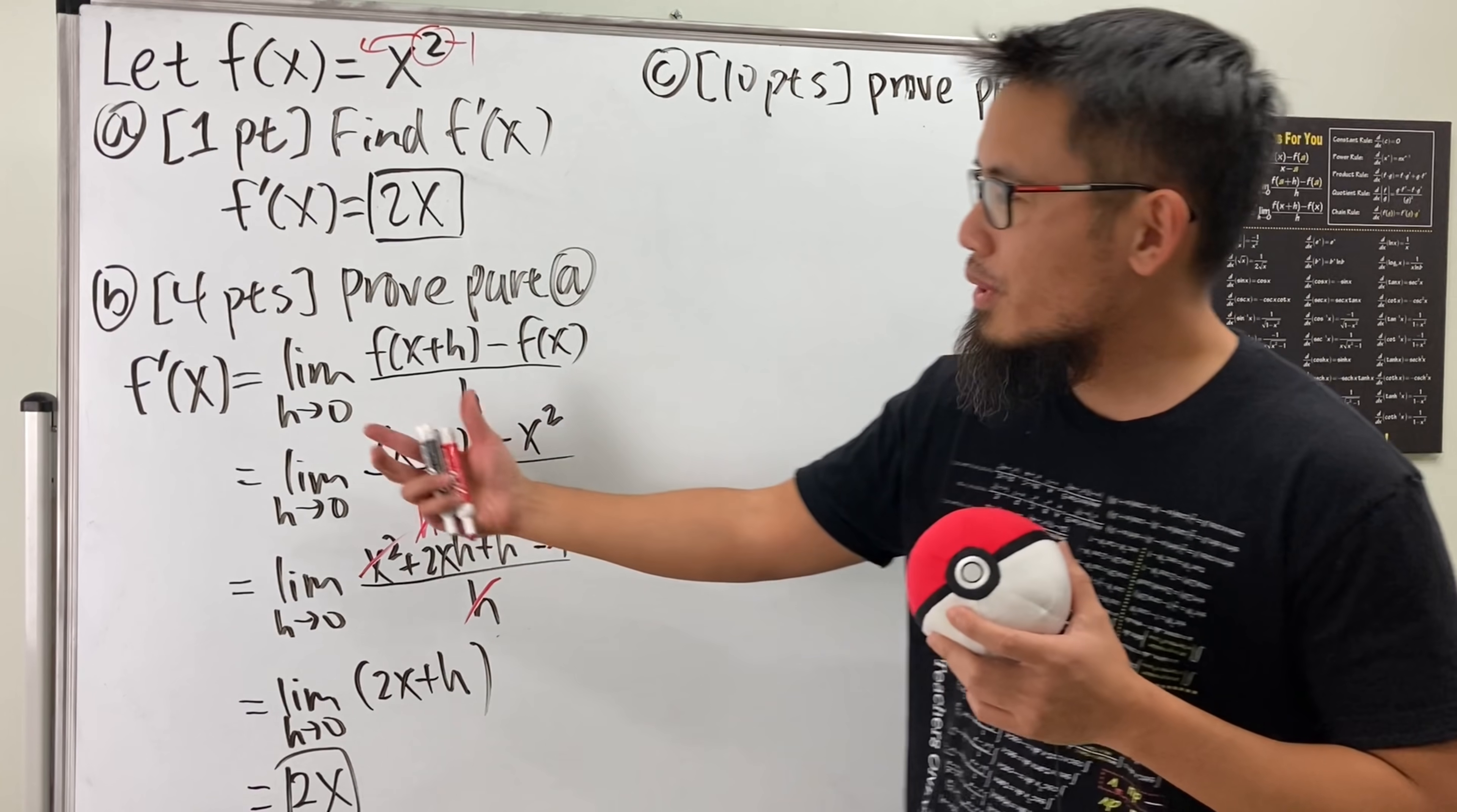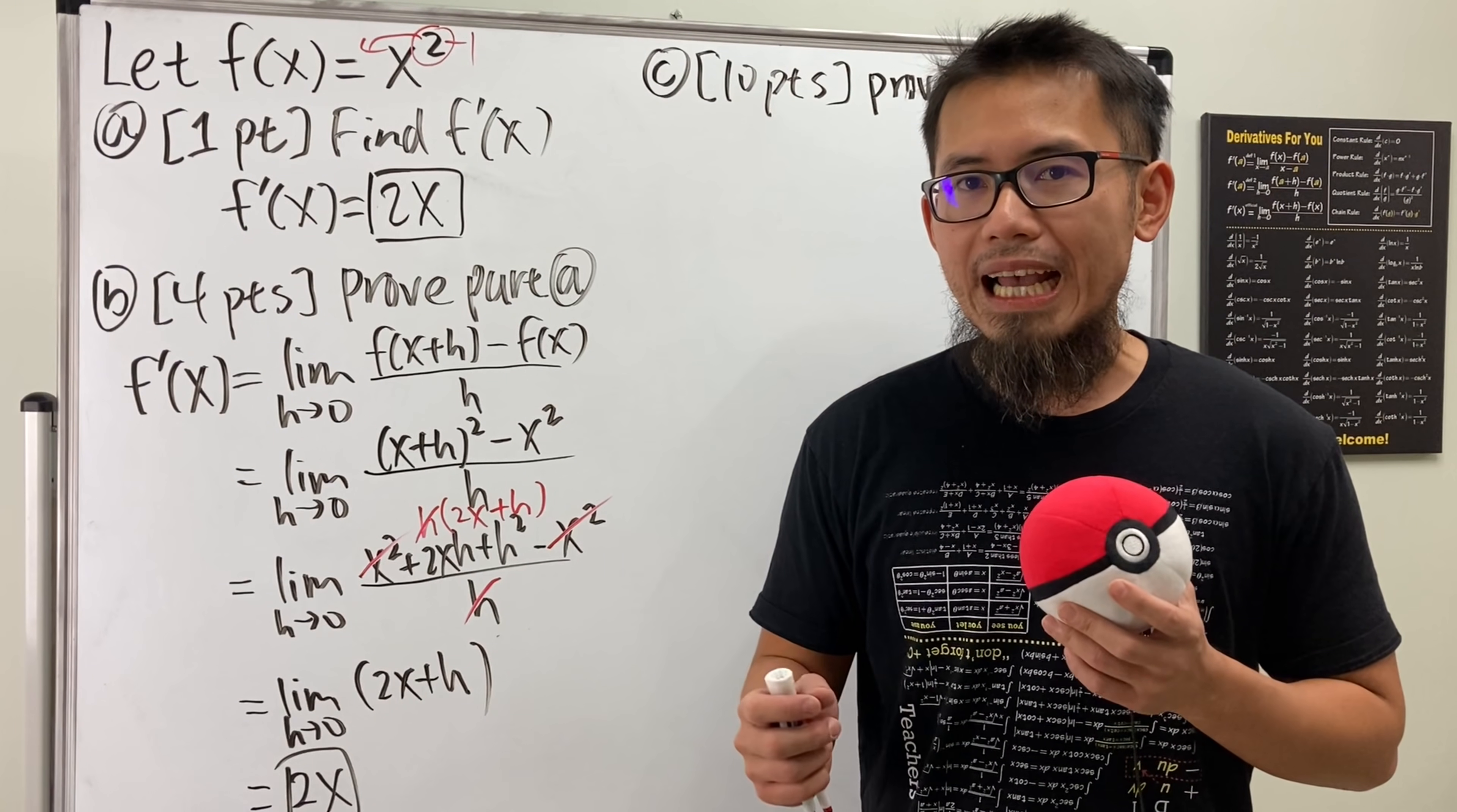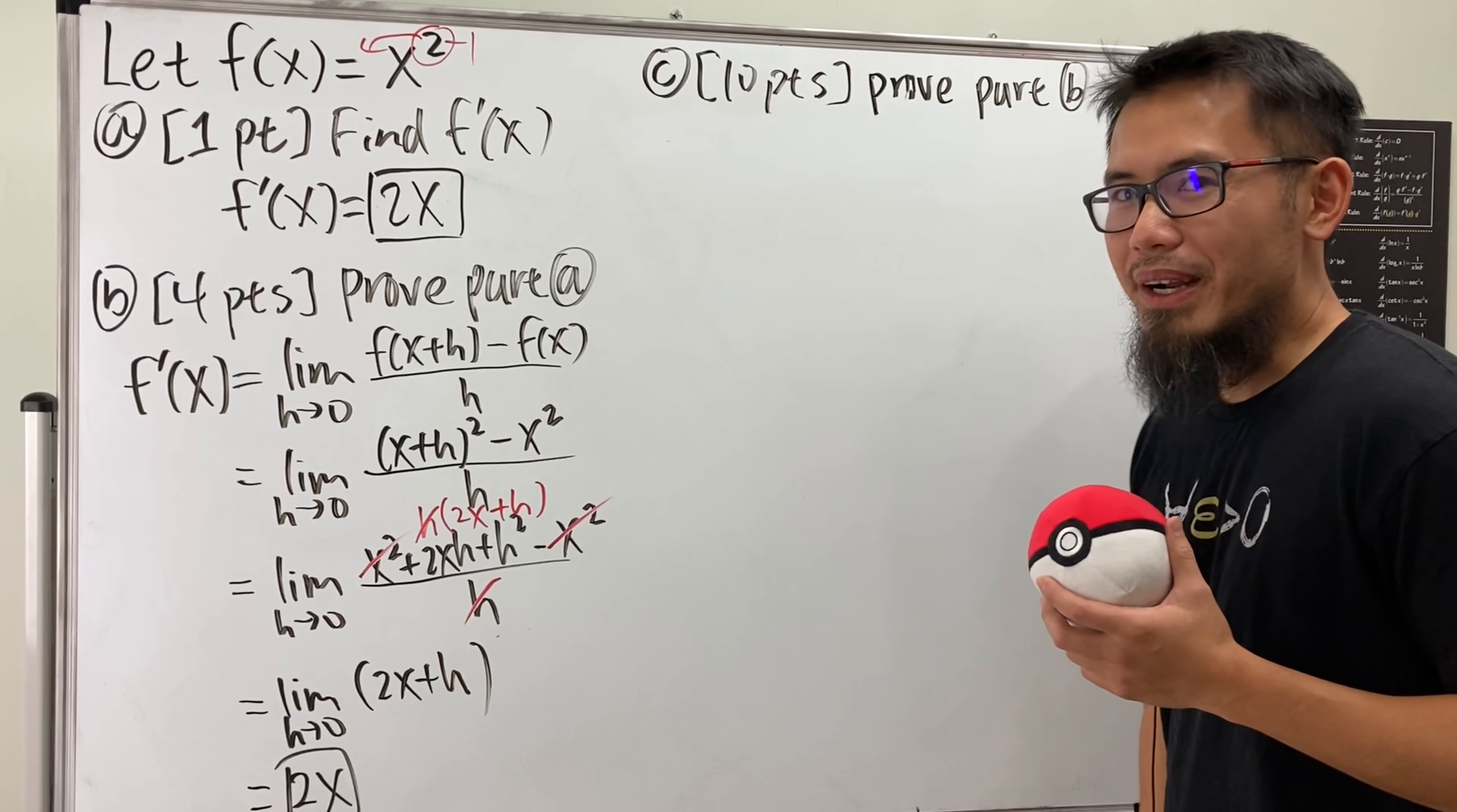Well, have a look. This right here is technically a limit question, right? It's a limit of this, and then we end up with 2x. So to prove the limit, we actually have to use the epsilon-delta definition of a limit. And yes, that's actually on my shirt already. Did you guys notice that?